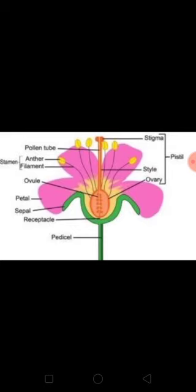Stamen is the male part of the flower and it consists of anther and filament. Filaments are the stalks which support the anther. Anther contains pollen grains, which are a dust-type structure. Pistil is the female part of the flower. It consists of stigma, style and ovary with ovule. Stigma is the upper sticky part of the pistil. The long neck-type structure is called the style. The lowest part of the pistil, that is the base, is the ovary, which contains structures known as ovules.